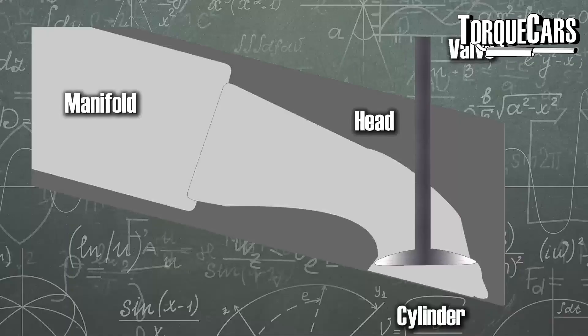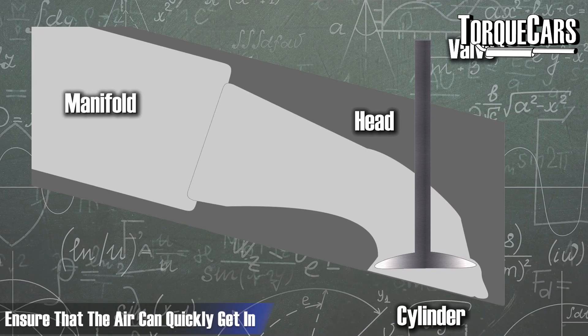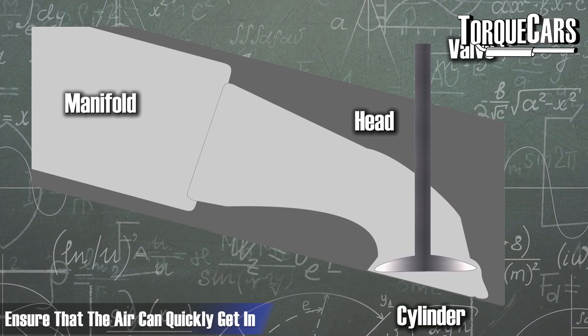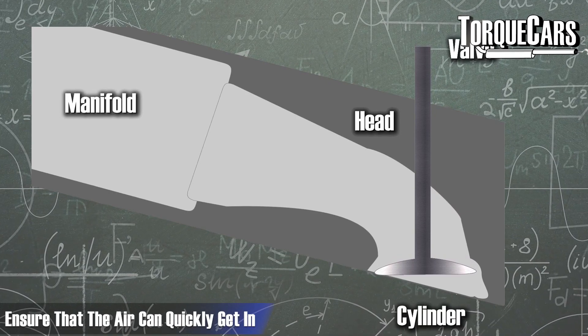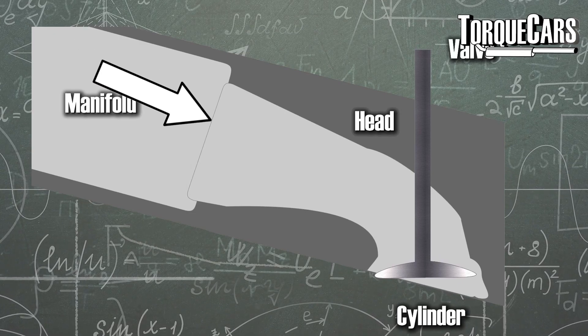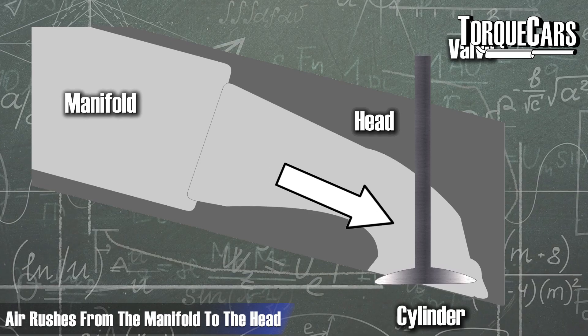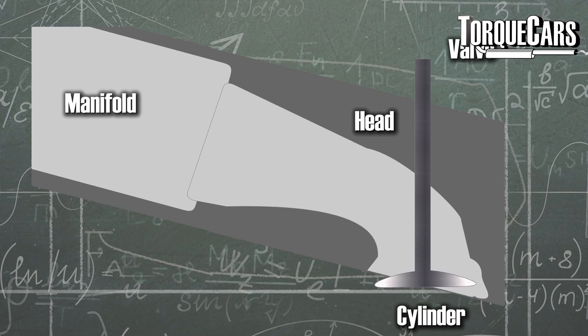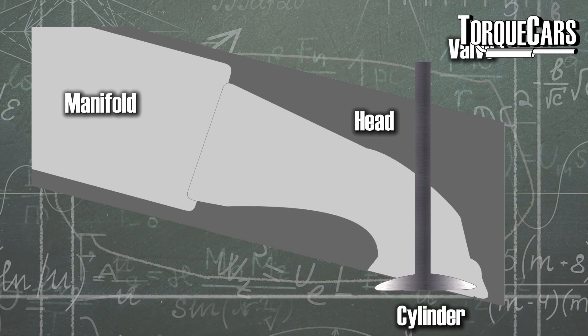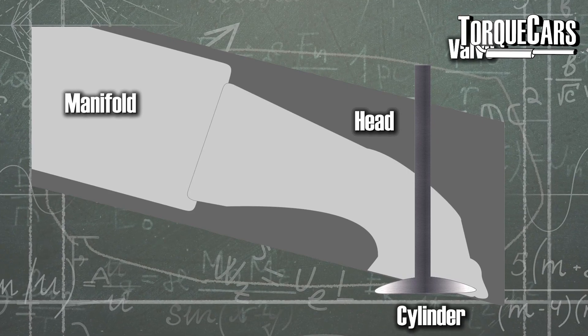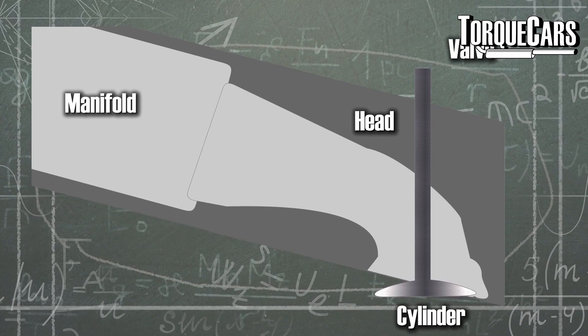When you're tuning your engine you really want to make sure the air can get into the engine as cleanly and quickly as possible. So as the valve opens, the air will rush from the manifold into the actual head of the engine. And just by addressing the way the air flows through these areas, you can usually make significant changes to the way that the engine is able to burn fuel and make power.